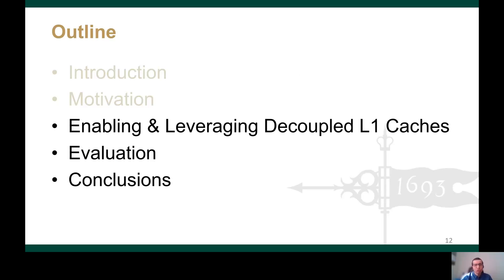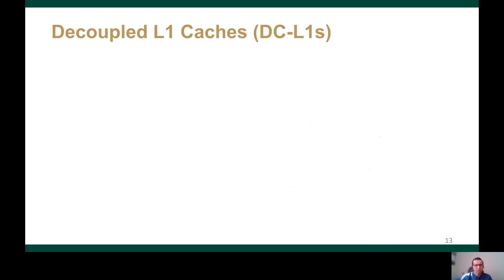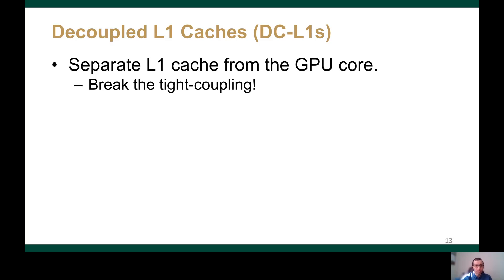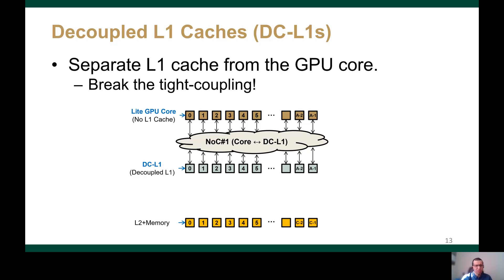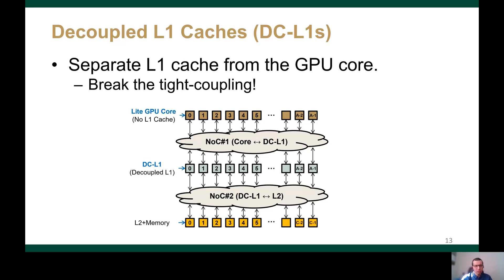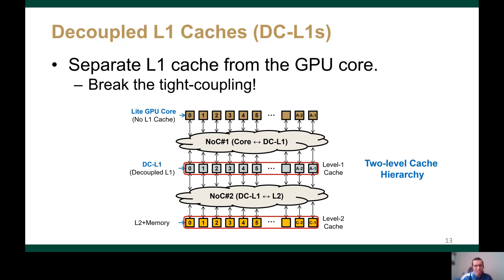I will now discuss our proposed decoupled L1 caches and how to leverage them to address these inefficiencies. To break the tight coupling between the cores and the L1 caches, we propose decoupled L1 caches, or DCL1s for short. A DCL1 cache is an L1 cache separated from the GPU core. Under this design, the GPU cores are light cores with no L1 data cache. These light cores are connected to the DCL1s via network number 1, and similarly the DCL1s are connected to the L2s via network number 2. Note that this cache design is still 2-level, with the DCL1s as level 1 and the L2s as level 2.